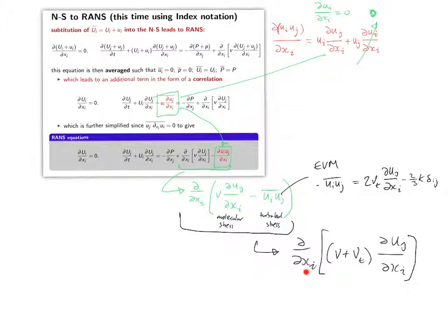The diffusion term then becomes D by DXI of nu plus nu T, where nu T is the turbulent eddy viscosity and nu is the laminar viscosity times by DUJDXI. And then the impact of this is to increase the diffusion.